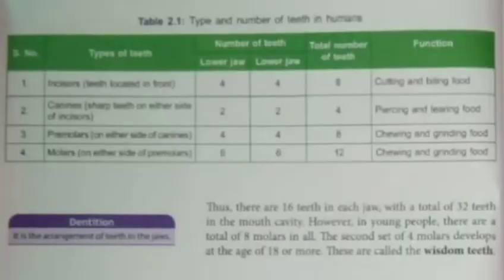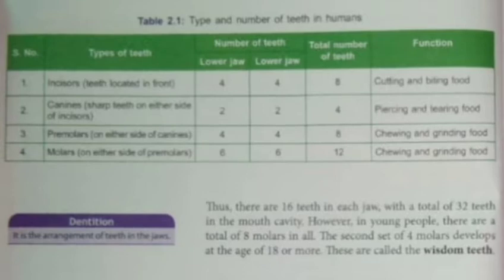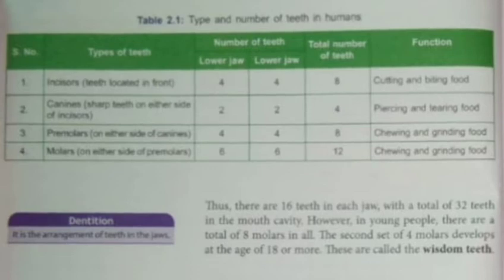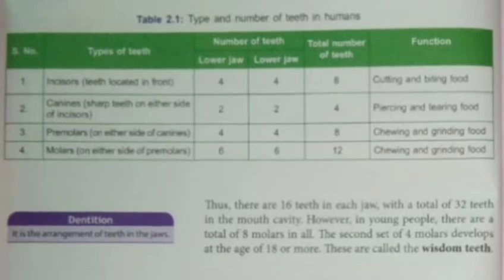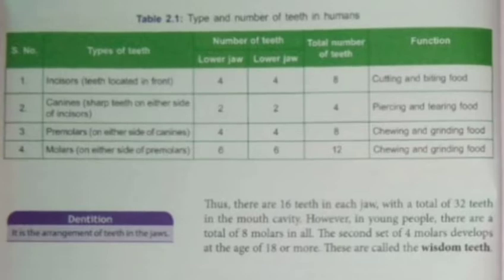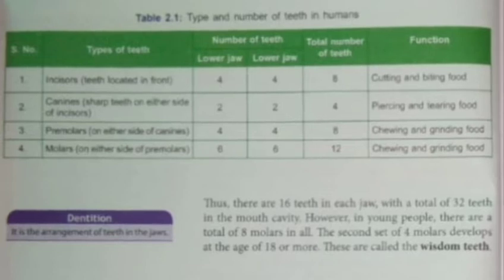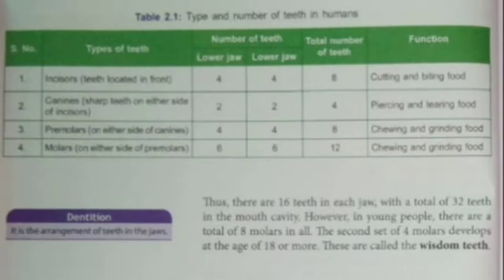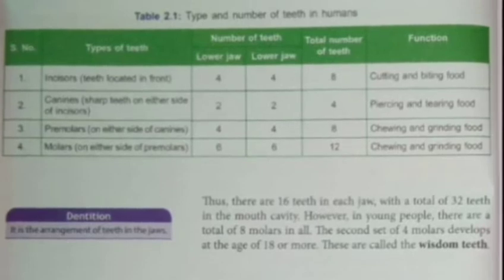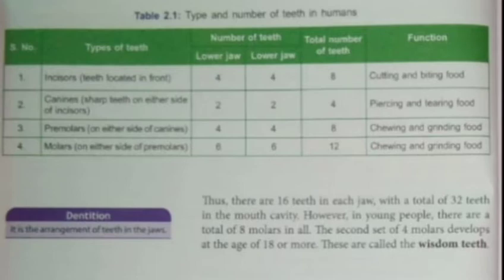We are having 16 teeth in each jaw — lower as well as upper — giving a total of 32 teeth in the complete mouth cavity. However, in young people there are a total of 8 molars. We have 12 molars in an adult, but in younger ones only 8 molars. The remaining 4 molars develop at the age of 18 or more, and these are called the wisdom teeth.